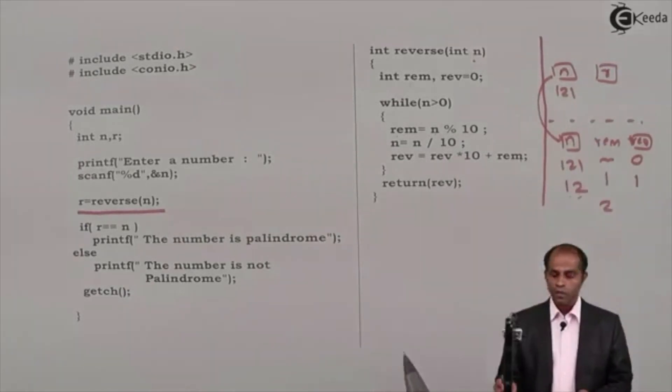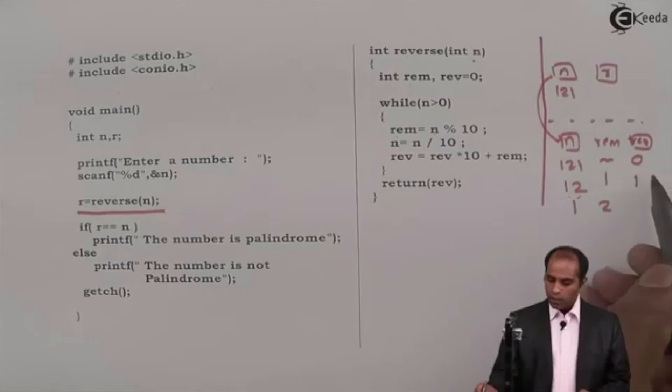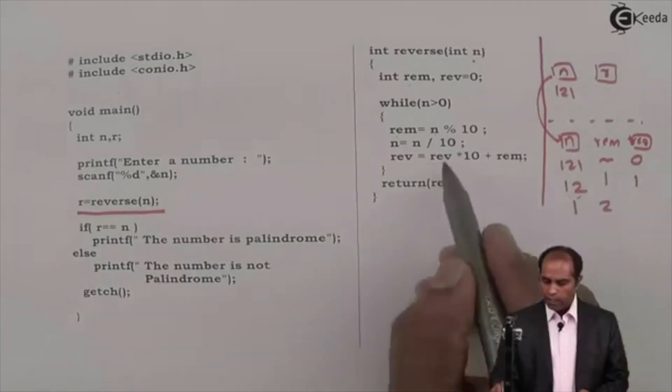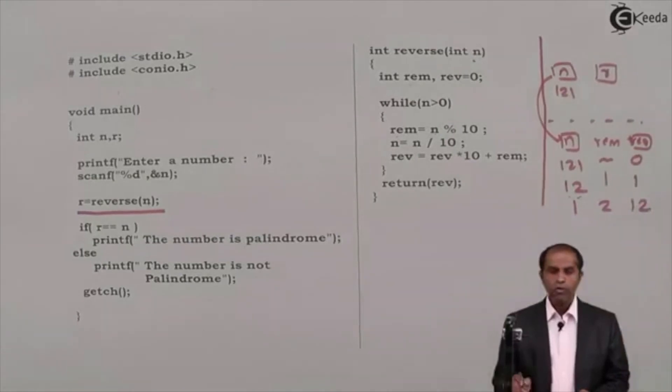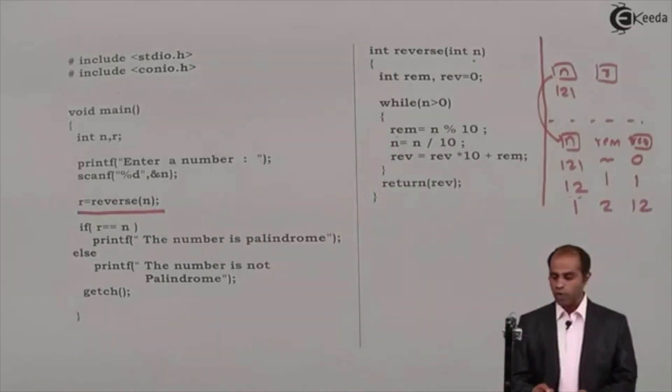12 is greater than 0. So 12 mod 10 is 2. 12 by 10 is 1. Rev equals to rev, that is 1 into 10 that is 10 plus rem, that is 2. 1 into 10 is 10, that is 10 plus 2 is 12.